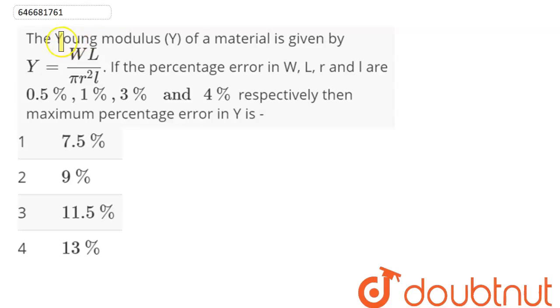The question is: Young modulus Y of a material is given by Y = WL/(πr²l). If the percentage error in W, L, r, and l are 0.5%, 1%, 3%, and 4% respectively, then what is the maximum percentage error in Y?